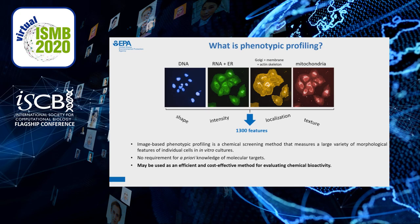What is phenotypic profiling? Phenotypic profiling is an imaging-based method that can be used for chemical screening. It works by labeling cells with a mix of different fluorophores and then taking pictures on a fluorescent microscope. We then quantify the phenotype of the cells by measuring the shape, intensity, localization, texture, or other features of individual cells. In our version of the assay, we obtain 1,300 features for each individual cell. The good thing about this method is that it doesn't require any prior knowledge of molecular targets, and we hope it could be used as an efficient and cost-effective method to evaluate chemical bioactivity.